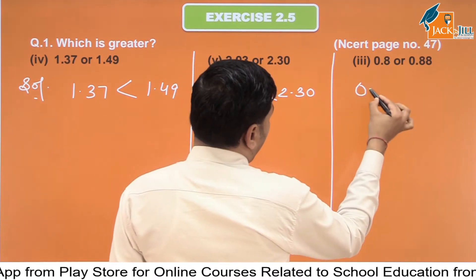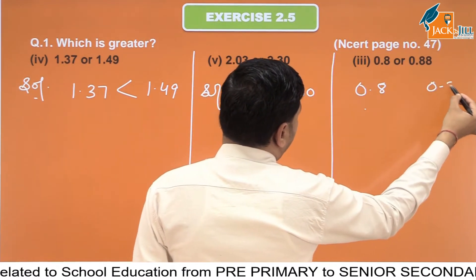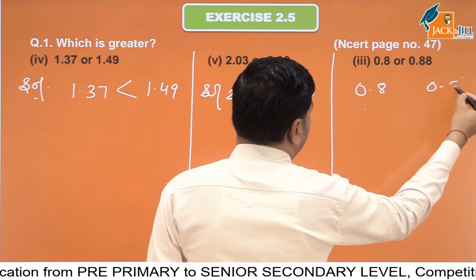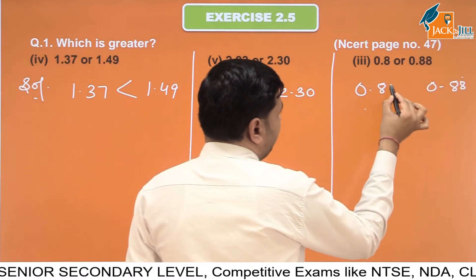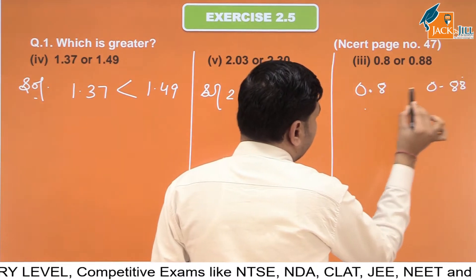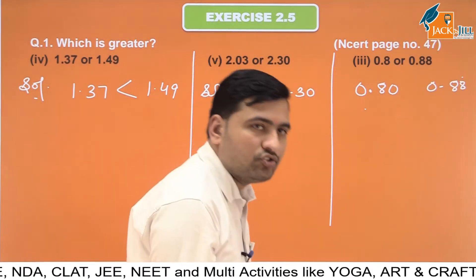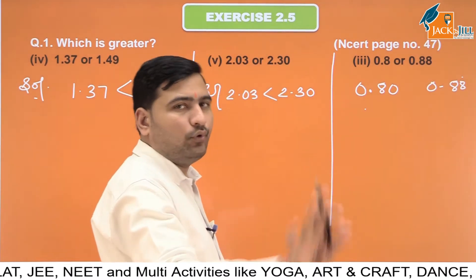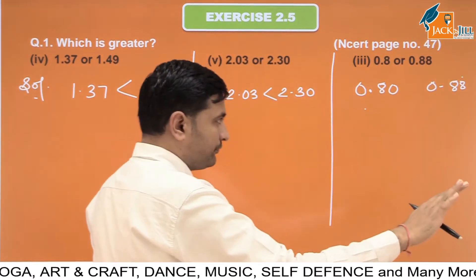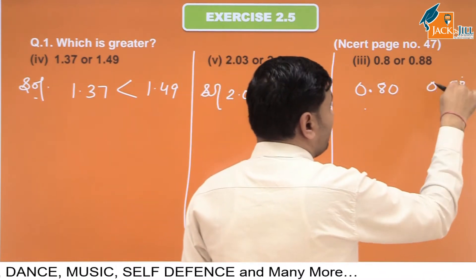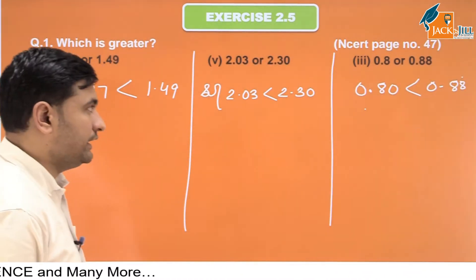0.8 और 0.88 में, 0.8 के point के बाद एक ही digit है और 0.88 में 2 digits हैं। Compare करने के लिए हम 0.8 को 0.80 लिख देते हैं, कोई फर्क नहीं पड़ता। Point के बाद पहला digit दोनों में 8 है, same है। फिर दूसरा digit यहाँ 0 है यहाँ 8 है, तो 0.88 बड़ा हो जाएगा।